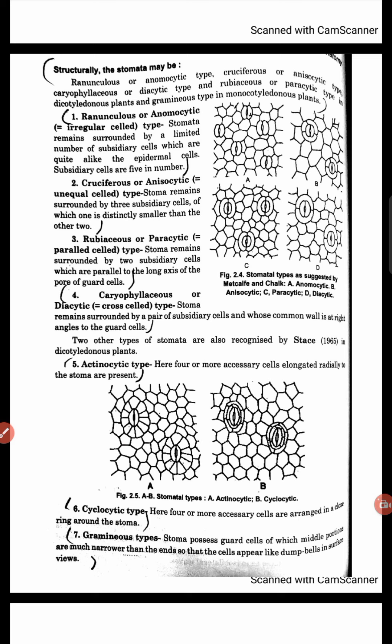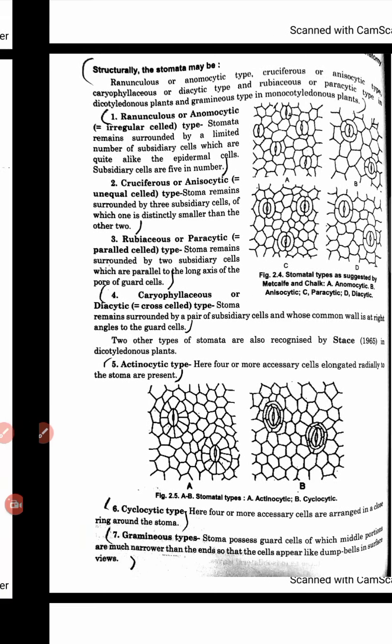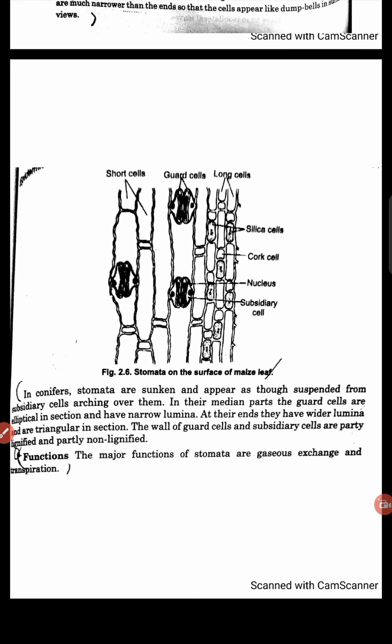Seventh: Graminaceous type. Here the stomata possess guard cells where the middle portion is quite narrow compared to the end portions, giving a dumbbell appearance. So these are seven types of stomata divided on a structural basis.